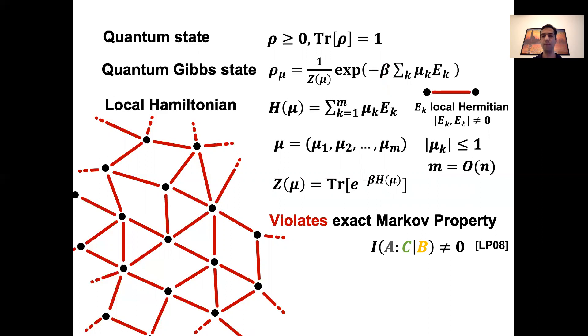These quantum systems have very interesting features. For instance, the Markov property that I discussed before for classical models is known to be violated in its exact form for quantum systems. This and other peculiar features makes the study of these systems more difficult compared to their classical counterparts. And in particular, efficiently learning these quantum models, meaning learning the interaction coefficients μ or the Hamiltonian in general, has remained open. In this talk, I'll present the first sample efficient algorithm for this problem.